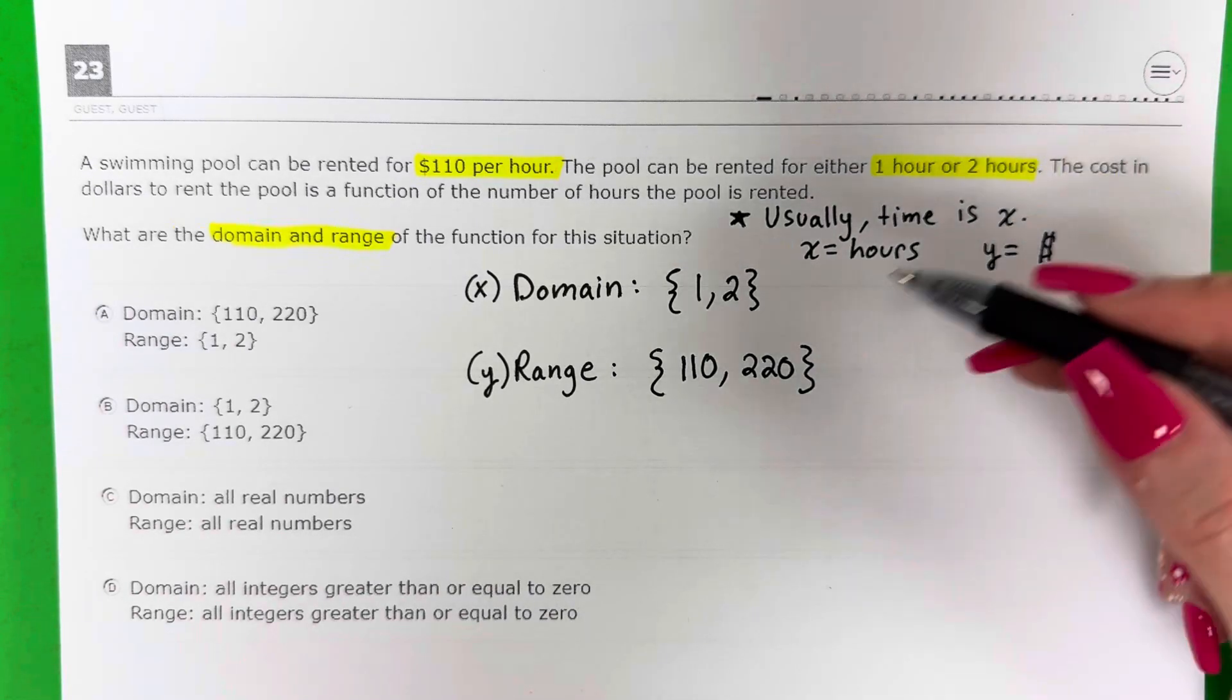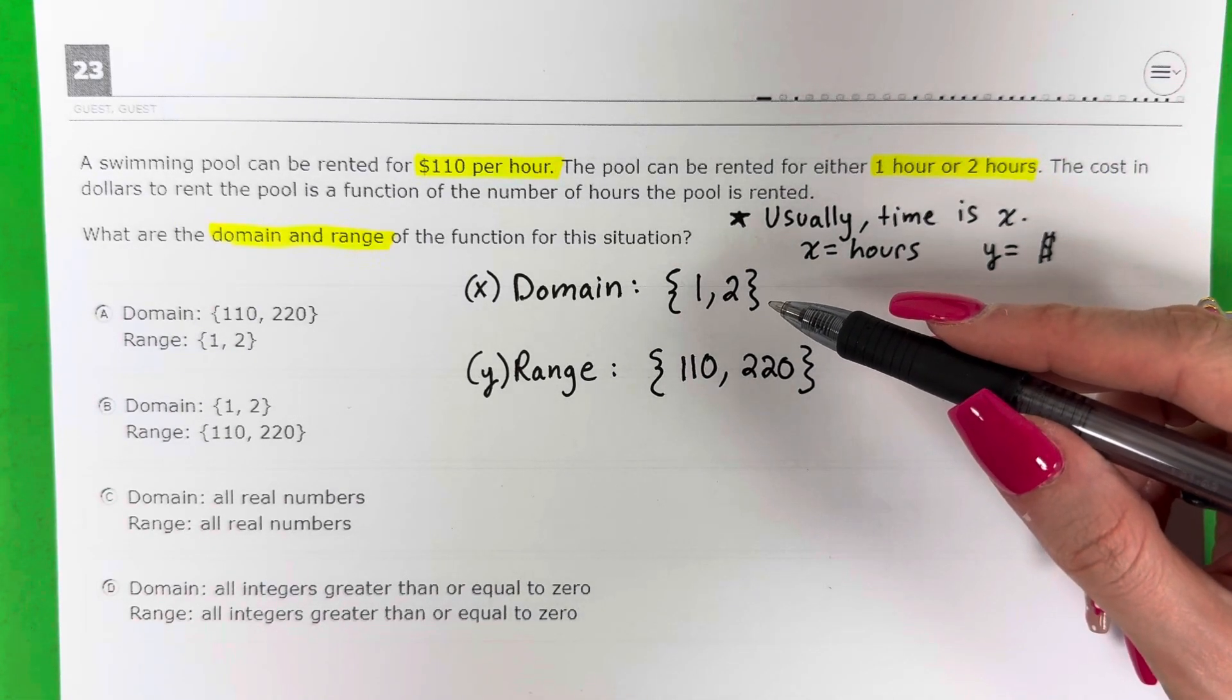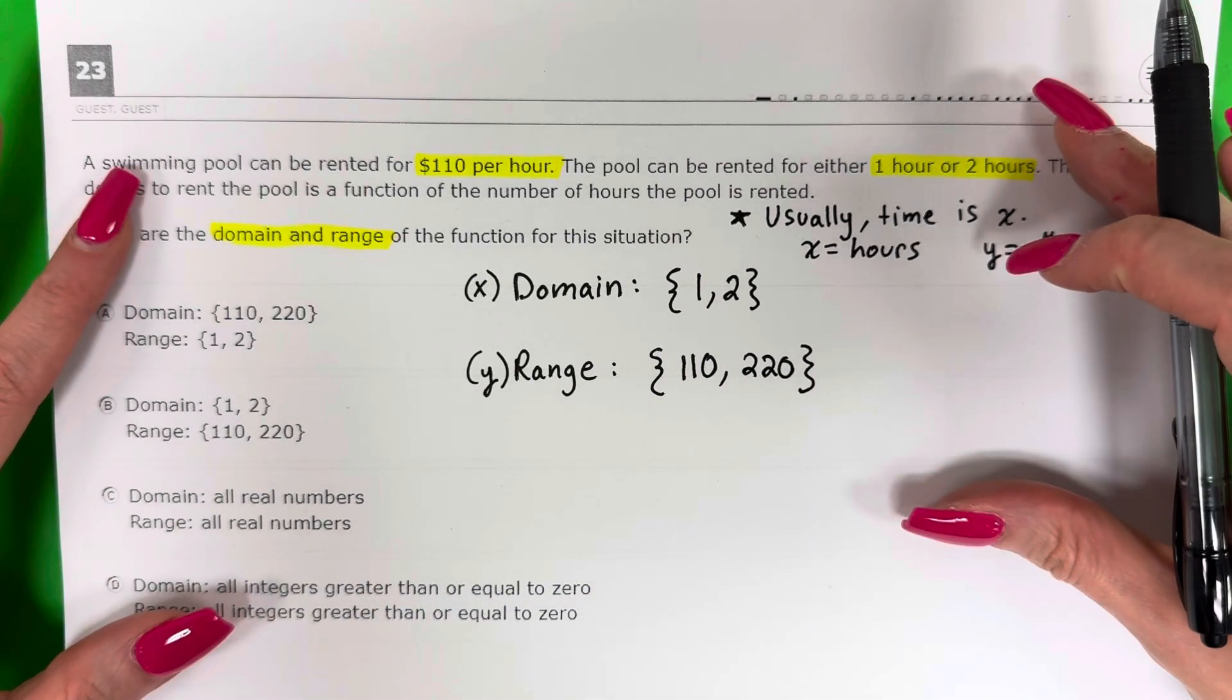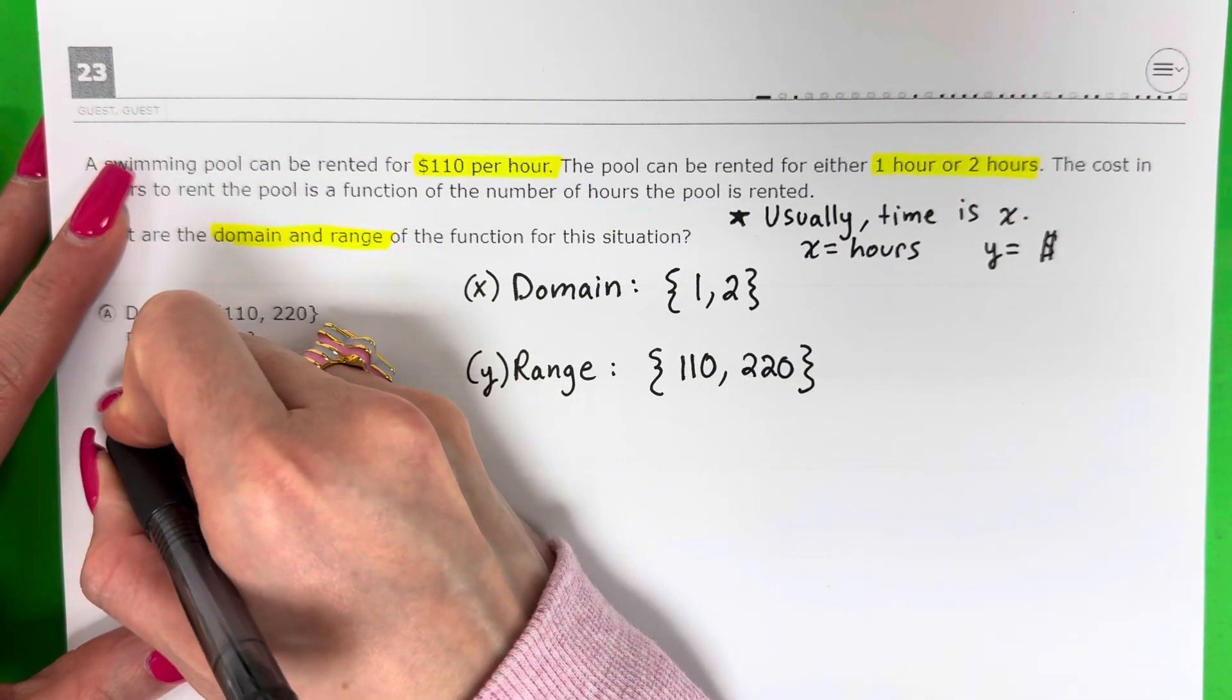It's just 1 hour and 2 hour. That's my x, which is my domain. And $110 for 1 hour, 220 for 2 hours. That's my range, my y. So it looks like my answer is b.